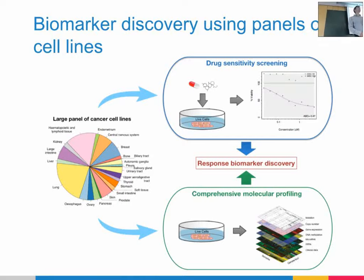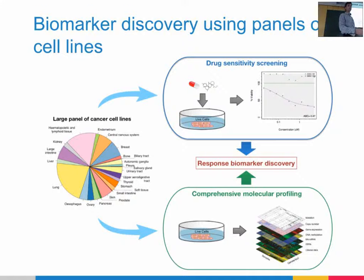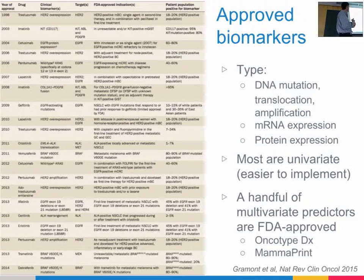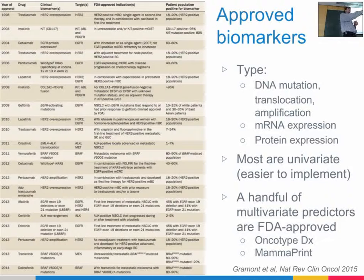Here you have drug concentration on a log scale with several increments, and the percentage viability of cells. If a drug does nothing, you get a flat line — the cell lines grow as well when treated versus the control. For that cell line the green line shows a drug that does nothing, so we say it's resistant. The purple line is an example where increasing concentration decreases viable cells — the cell line is sensitive to that drug. Looking at the literature, there are approved biomarkers like BRAF mutation for melanoma response to a BRAF inhibitor, or ERBB2 expression for Herceptin in breast cancer.